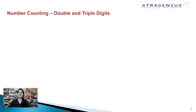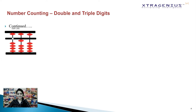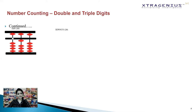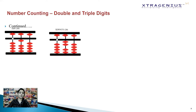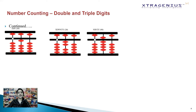Let's try counting double and triple digit numbers. For 10, that's zero in the unit's place and one in the tens place — move one lower bead in the tens place towards the center bar. For 20, break it down to two in the tens place and zero in the unit's place, so move two lower beads in the tens place towards the center bar. And so on for 30 and 40. For 50, move the upper bead in the tens place towards the center bar.